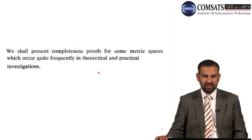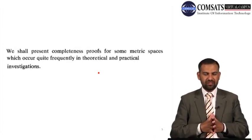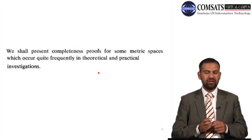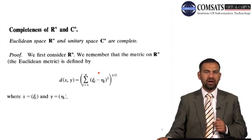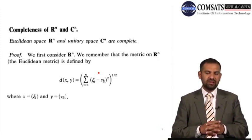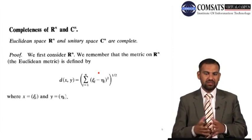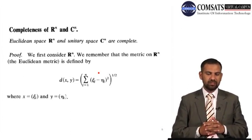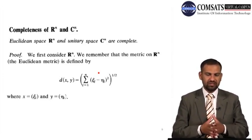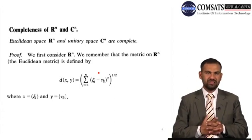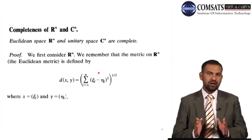We shall present completeness proofs for some metric spaces which occur quite frequently in theoretical and practical investigations. Our first example is the completeness of R^n and the completeness of C^n — the collection of all n-tuples of complex numbers. The Euclidean space, n-dimensional space, and unitary space are all complete.